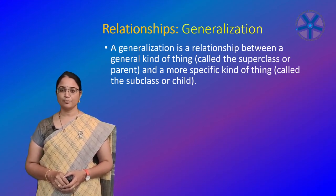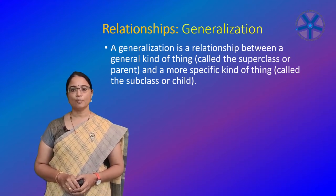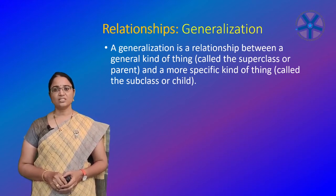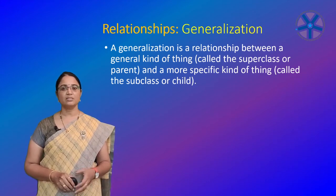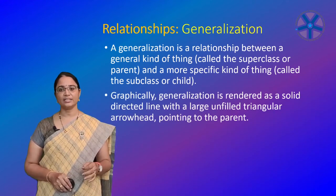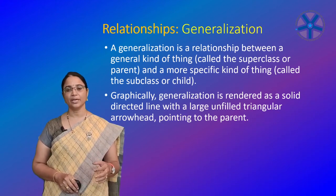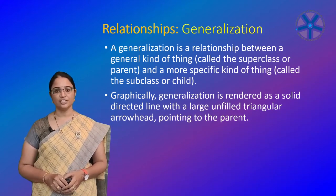A child inherits the properties of its parents, especially their attributes and operations. An implementation of an operation in a child overrides an implementation of the same operation in the parent — this is known as polymorphism. To be the same, two operations must have the same signature, meaning the same name and same parameters.